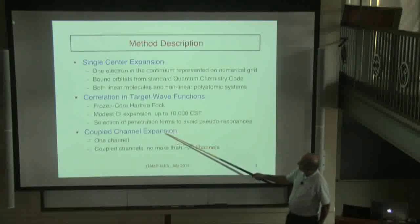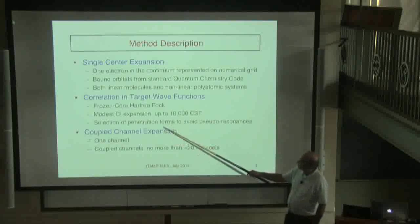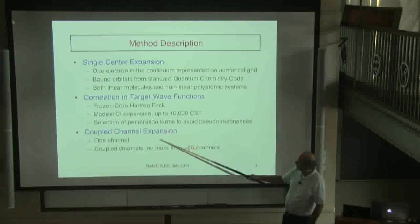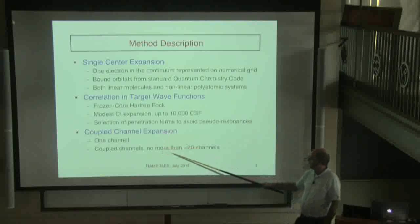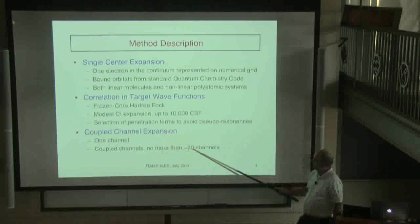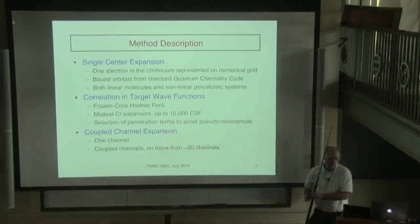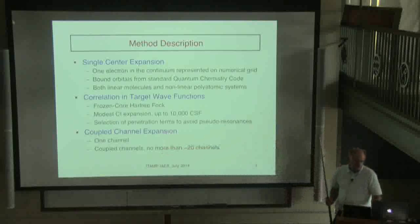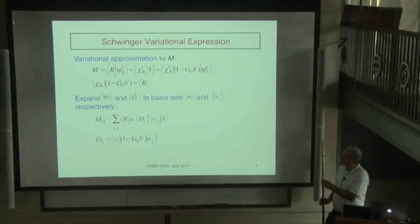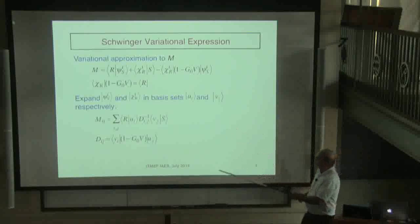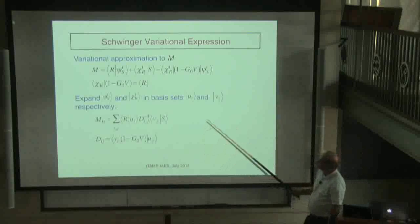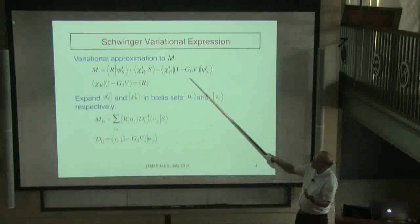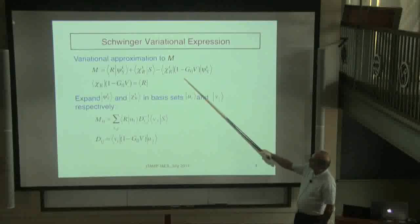We use a coupled-channel type expansion, and even the coupled-channel expansions typically don't go up to more than 20 electronic channels. The numerical codes I've been using are based on the Schwinger variational method, but this is a very simple coupled-channel representation of that.